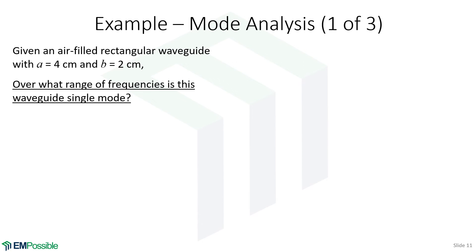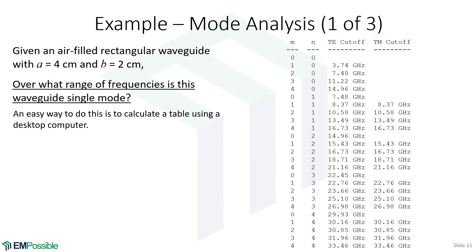For an example: consider a wave guide with a width of four centimeters and a height of two centimeters. The question is over what range of frequencies is this wave guide single-moded? A convenient approach is to use a computer with a double for loop over M and N to calculate all cutoff frequencies, then sort them in order of increasing frequency.